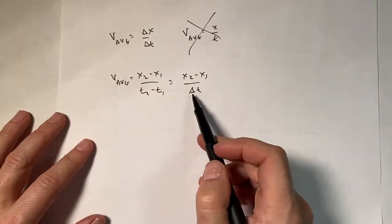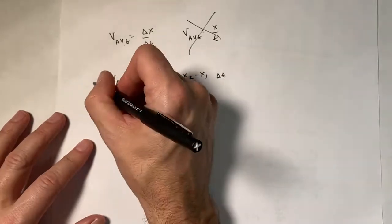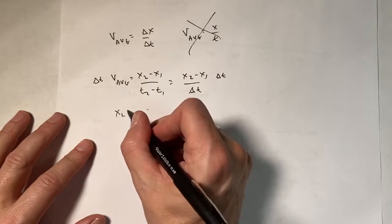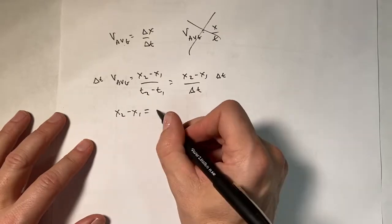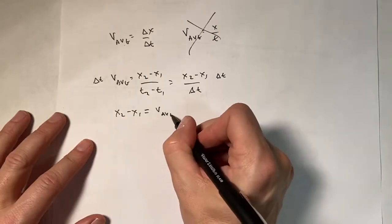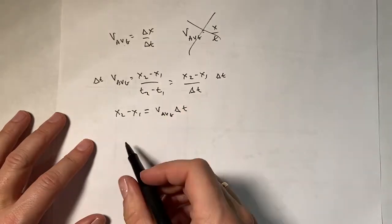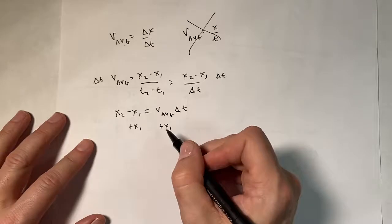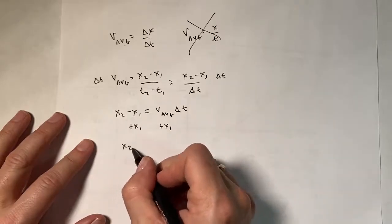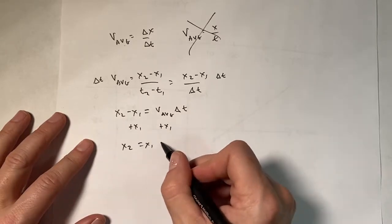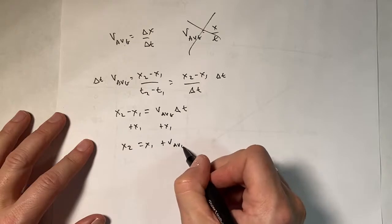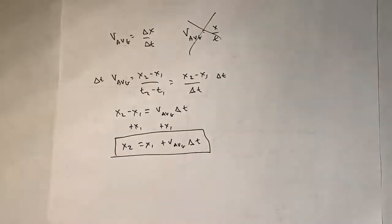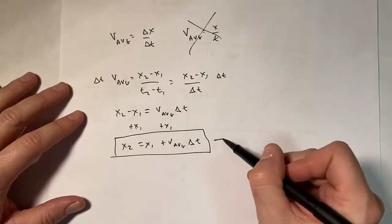In fact, let me actually write this as x2 minus x1 over delta t. Now, if I multiply both sides of the equation by delta t, then I get x2 minus x1 equals v average delta t. Now I'm going to add x1 to both sides, and then I get x2 equals x1 plus v average delta t. This is a very, very useful equation.